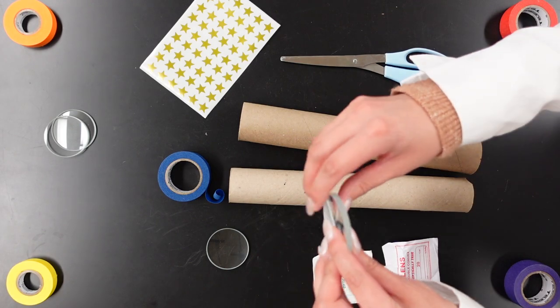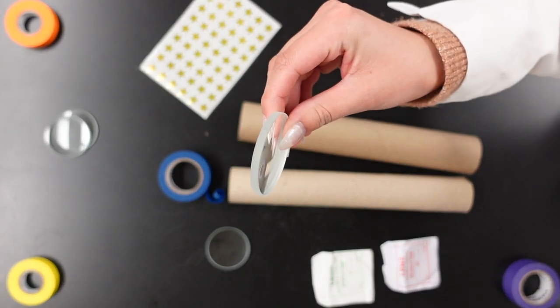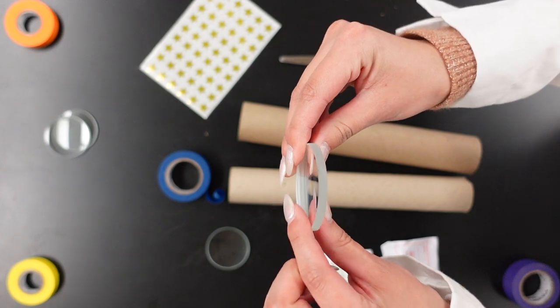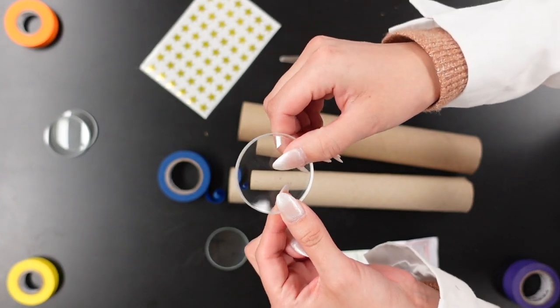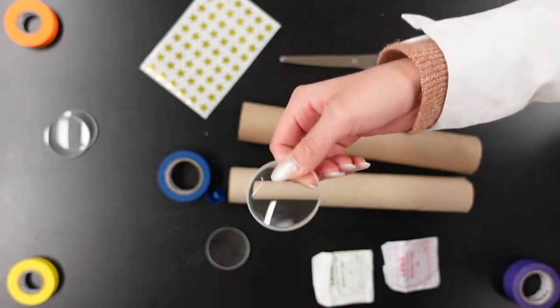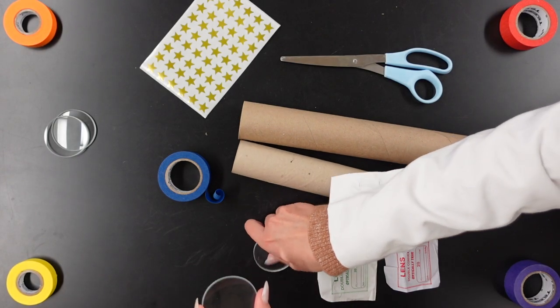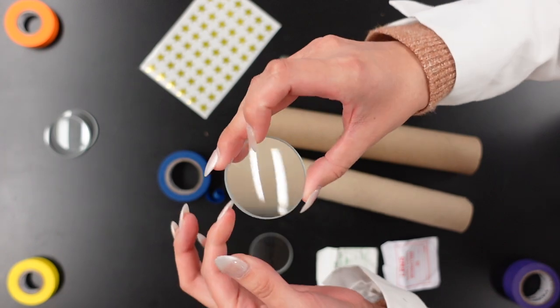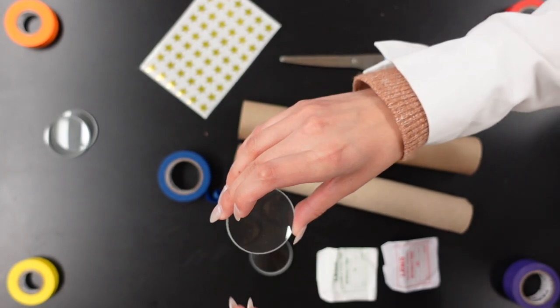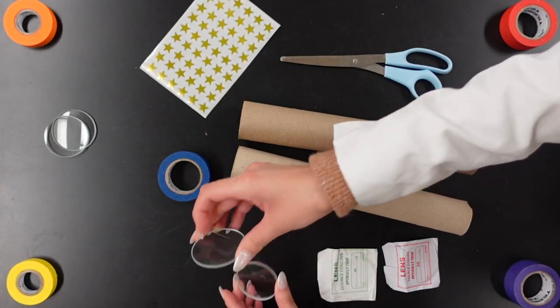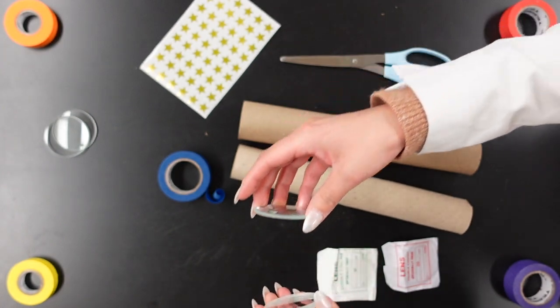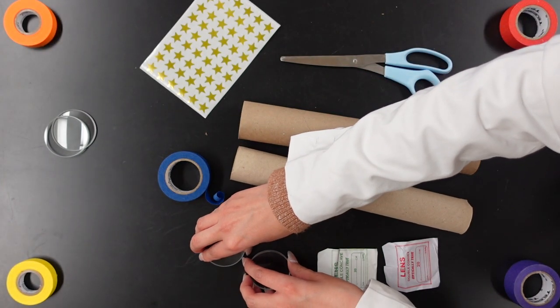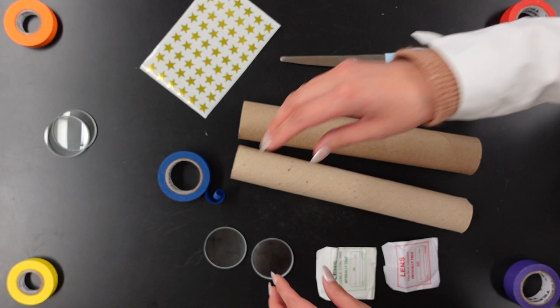So this is called a double concave lens. You can kind of see from the side it's a little thick and then it gets really thin in the center. The opposite is true for the double convex lens. It starts out pretty thin and then it gets thicker in the center here. These are going to work together in order to magnify the night sky for you and your telescope.